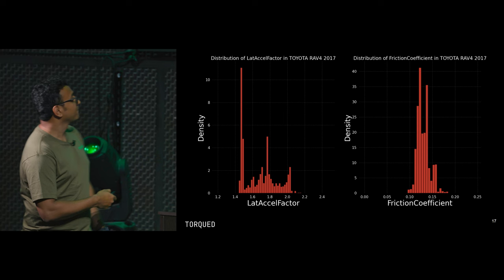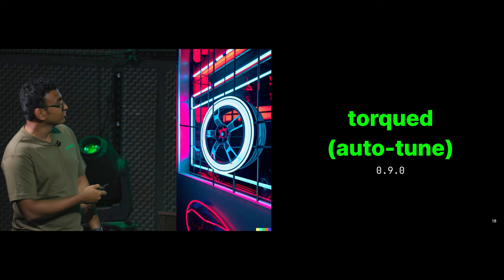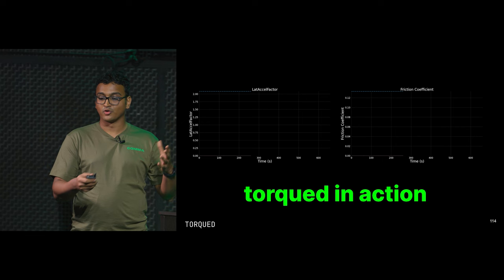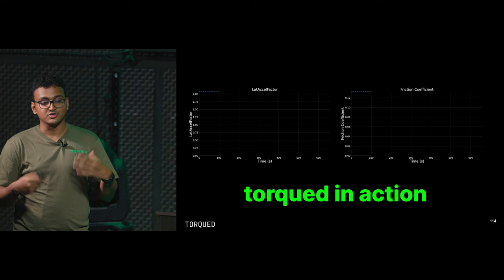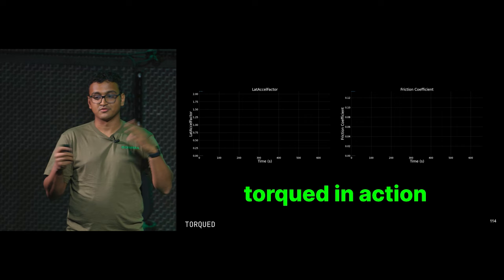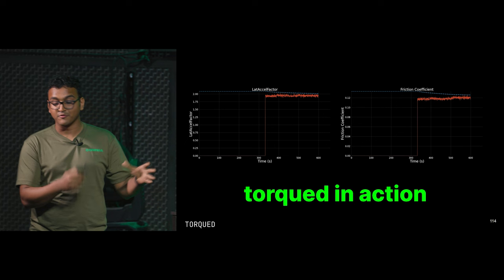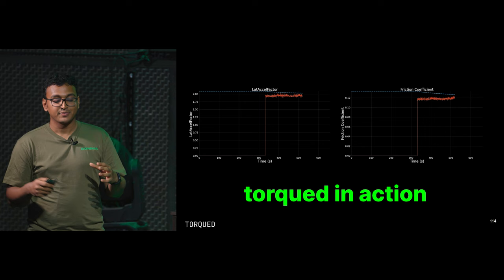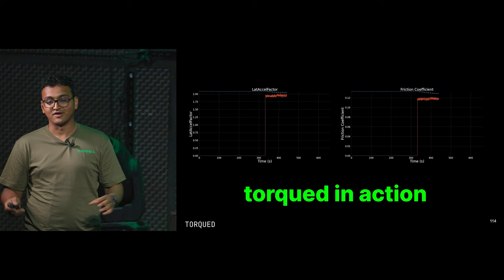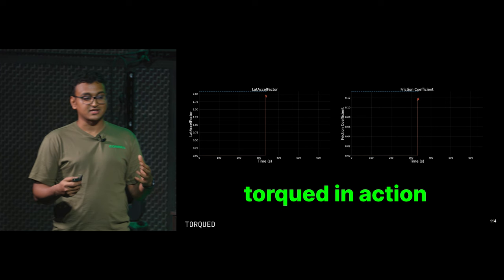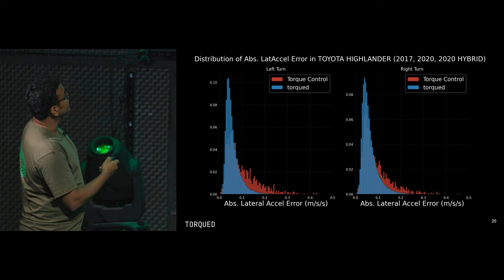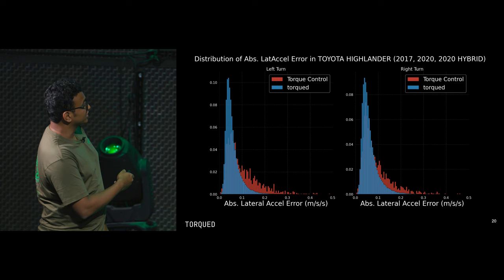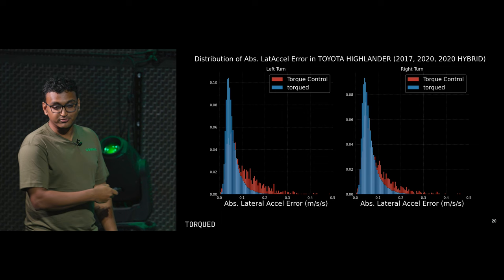This inspired the effort called TorqueD, which is auto-tune. Basically, the same computation we were doing offline on all the data from a platform like the RAV4, we now do on your device while you're driving. When you start driving, we collect data, and once it meets certain conditions, we fit the algorithm that we were running offline — now on your car. We have one constant that is learned on your car, and the great thing is that if you change your tires next week, refill air, or put stuff on top of your car, it learns live and adapts live. Going back to the same metric for Toyota Highlanders, torque control was already an improvement over the previous generation, but TorqueD was an even better improvement over that.